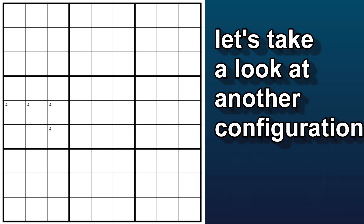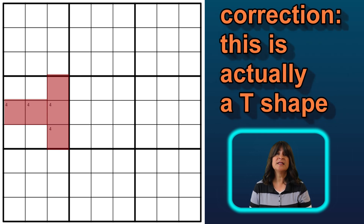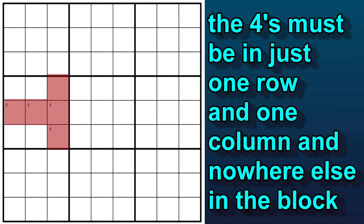Let's look at another possible configuration of the one row, one column restriction. Here you can see, instead of the top row, I'm using the middle row and the last column. All the 4s are in this row and this column, so again we have a sort of L shape. In this case, the empty rectangle cells are these 4 cells — they cannot contain the number 4, or this pattern won't work. Not all the cells have to have numbers in them, but the 4 has to be in either this row or this column and nowhere else in the block.